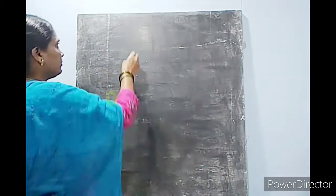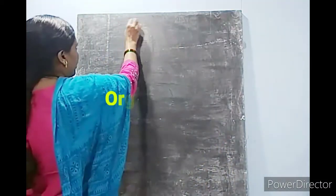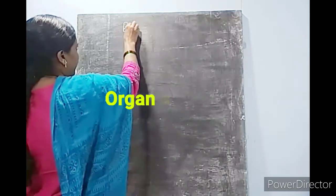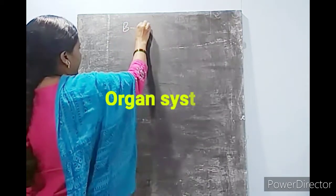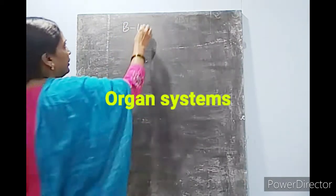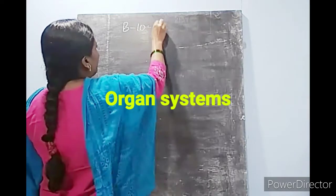So before going to discuss that, we will see what is the meaning of an organ. There are different organs in our body and all these organs are working together. So to understand the word organ, we will do one small activity now. Our today's topic is Block 10 Organ Systems.